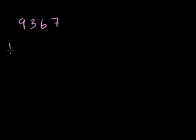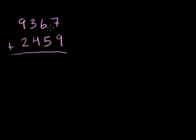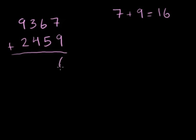Let's do a bunch more addition problems. 9,367 plus 2,459. We start in the ones place — the ones column. Add the 7 ones plus the 9 ones: 7 plus 9 is 16. Write the 6 in the ones place and carry the 1.